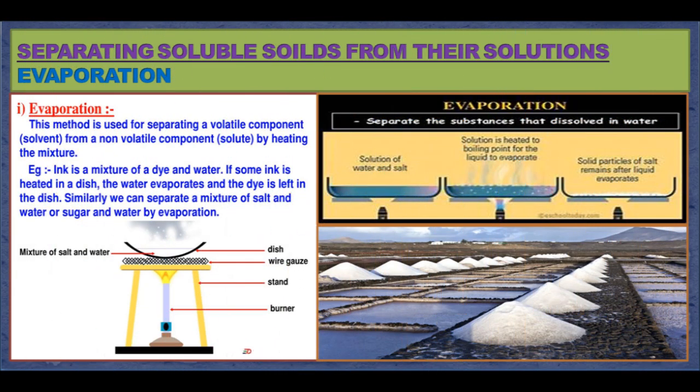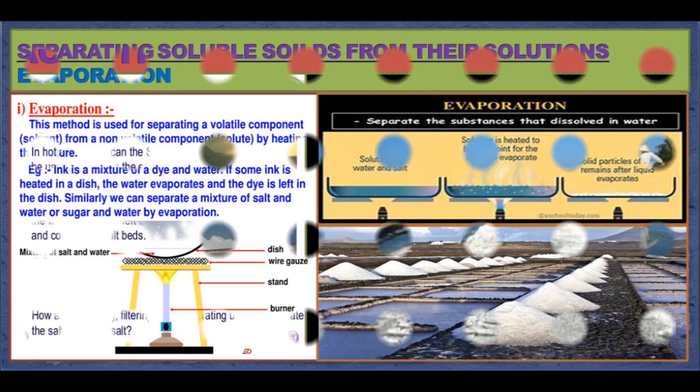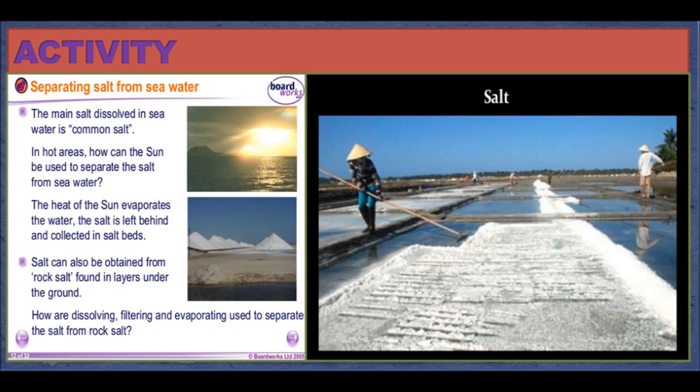Separating soluble solids from their solutions: Evaporation. Evaporation is a method used to recover a dissolved solid from a solution, utilizing the difference in boiling points of different components. The solution is heated, causing the liquid to evaporate and leaving behind the solid. Common salt is produced naturally from seawater this way — seawater is collected in shallow ponds and water evaporates in the heat of the sun, leaving salt behind. In an activity, pour water in a pan, add 3 to 4 tablespoons of salt and stir. Heat the mixture on a gas burner — the water changes to water vapour, and after all water has evaporated, salt is left behind.